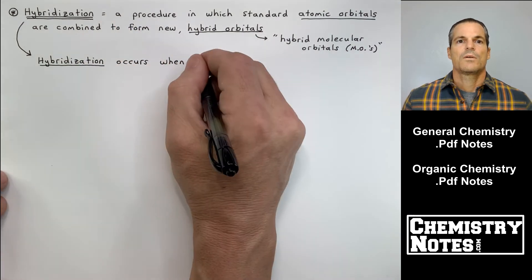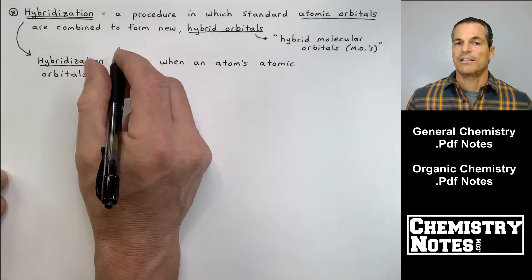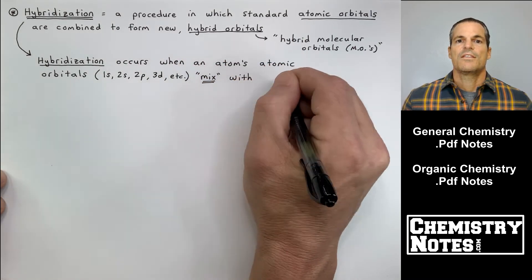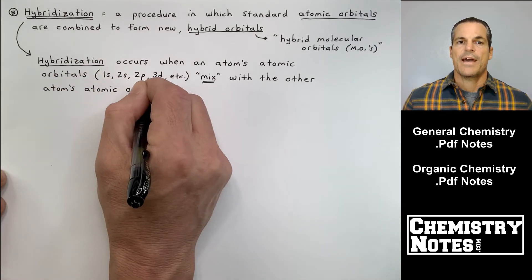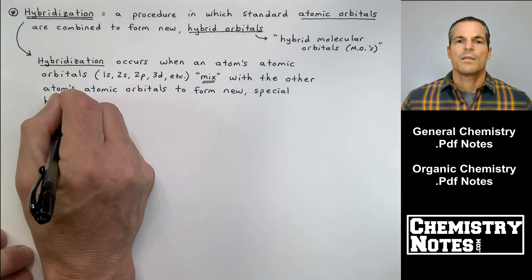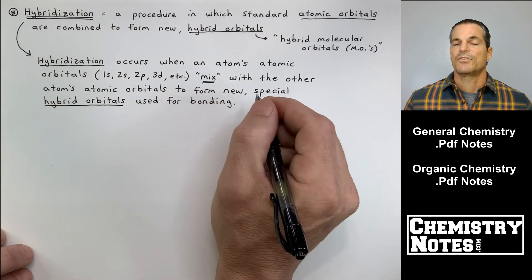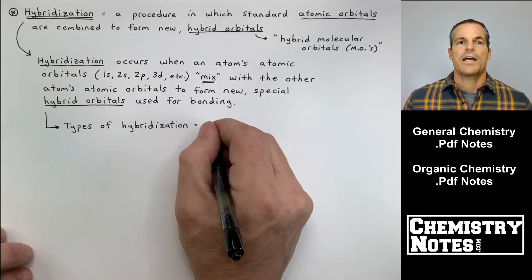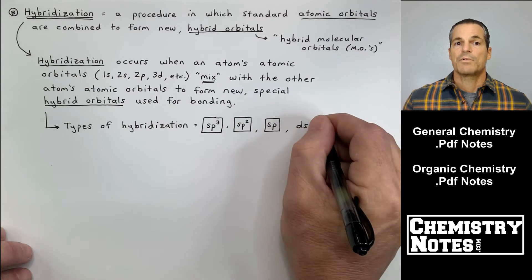Hybridization occurs when an atom's atomic orbitals, for example, carbon has 2s and 2p as its valence atomic orbitals, but hybridization occurs when an atom's atomic orbitals mix with the other atom's atomic orbitals to form new, special hybrid orbitals. Hybridization occurs when an atom's atomic orbitals mix with the other atom's atomic orbitals to form new, special hybrid orbitals used for bonding.